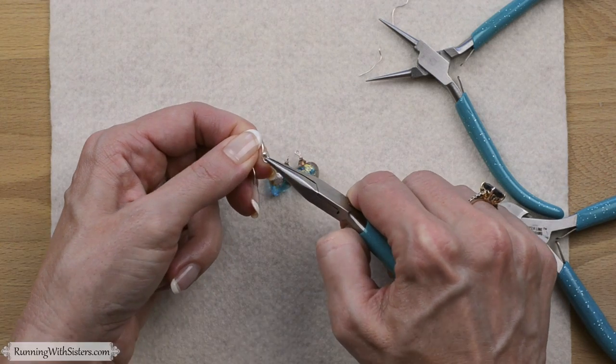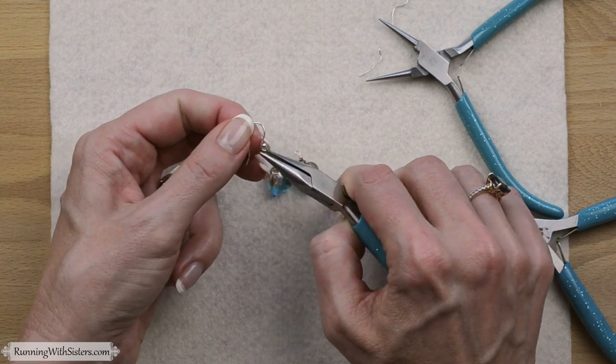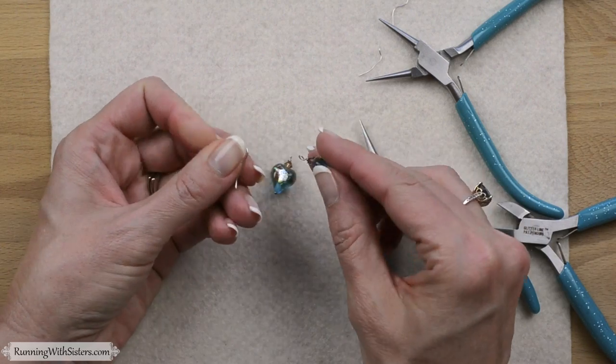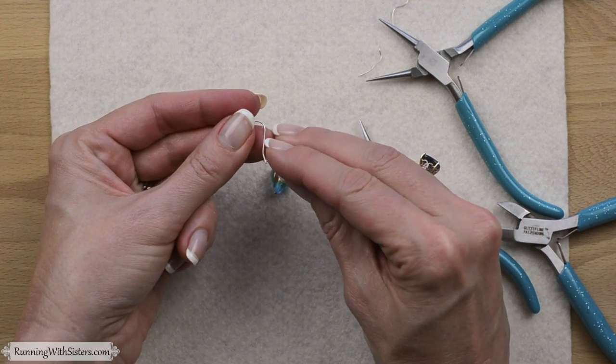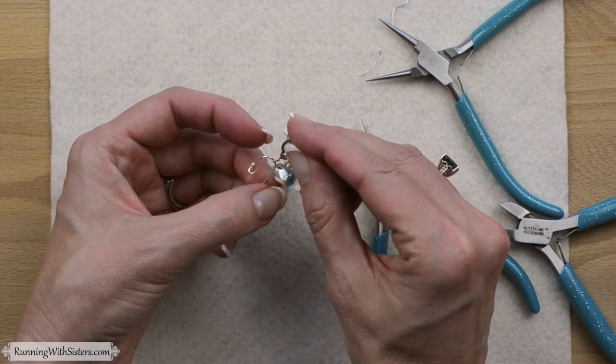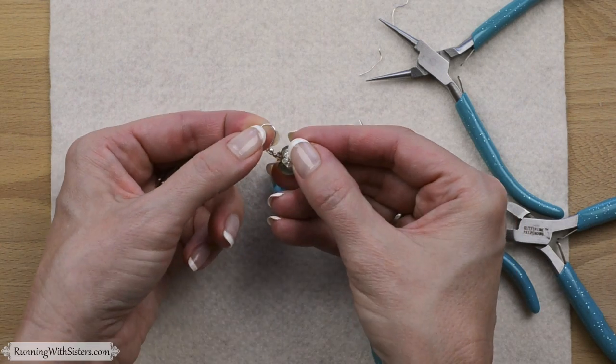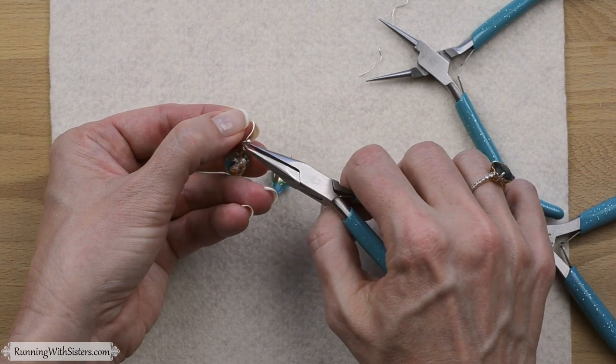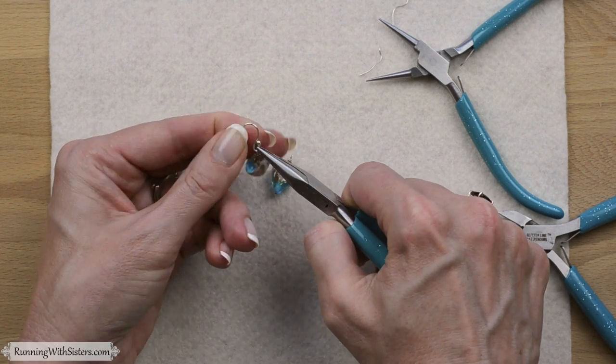That way you don't lose the shape. We're going to flip it over, take that loop, feed it onto the earring wire, pull it around into the little nook, and then close the little door or the loop. Just like that.